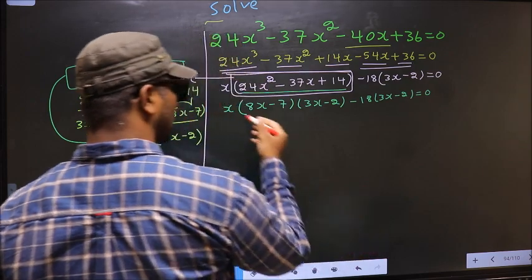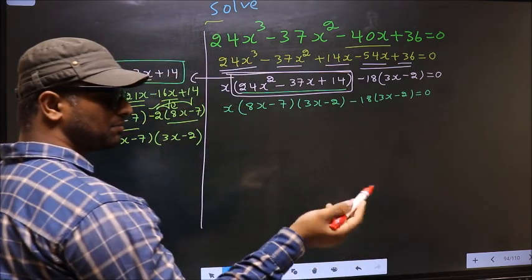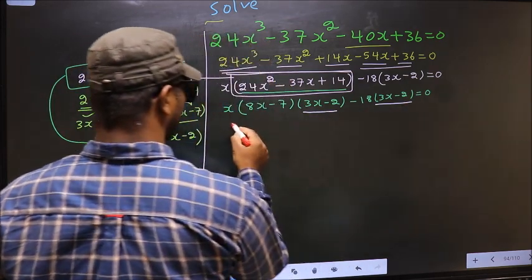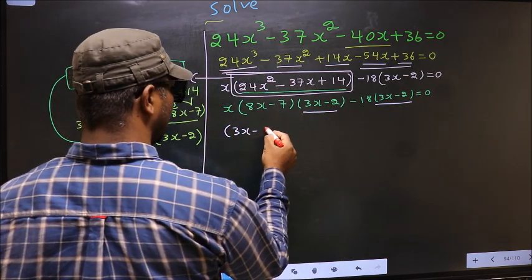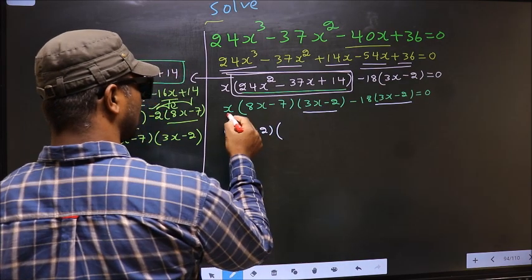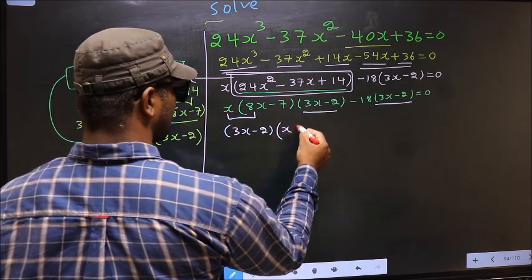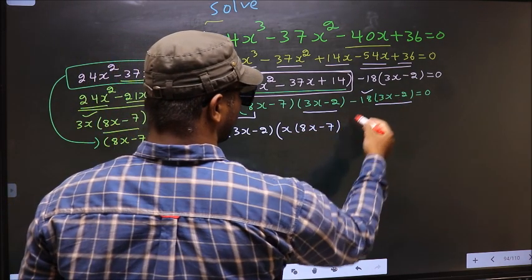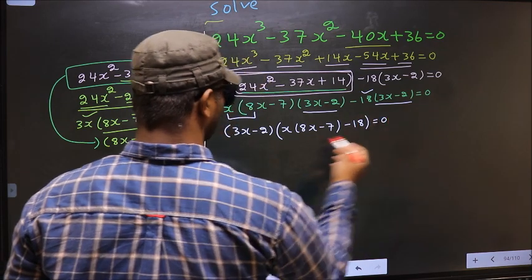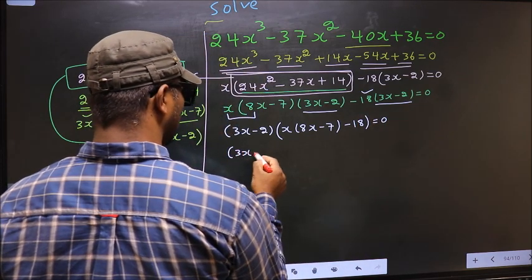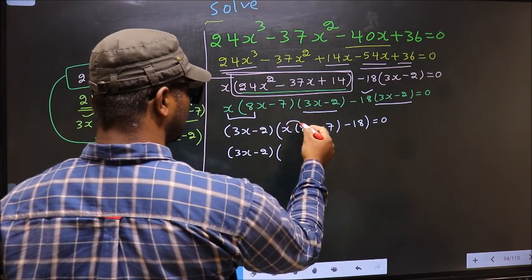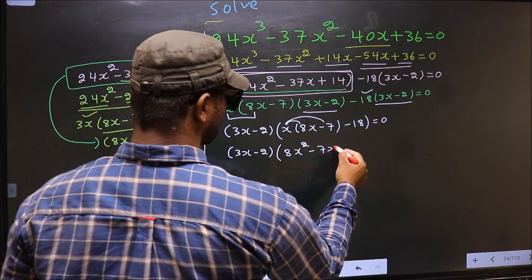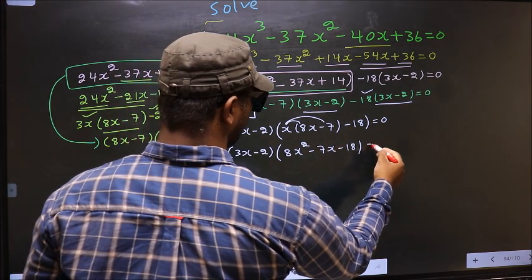Now from this entire equation what can be taken out common is 3x minus 2. So 3x minus 2 outside. Over here we are left with x times 8x minus 7, and minus 18, equal to 0. Opening up the brackets gives 8x² minus 7x minus 18 equal to 0.